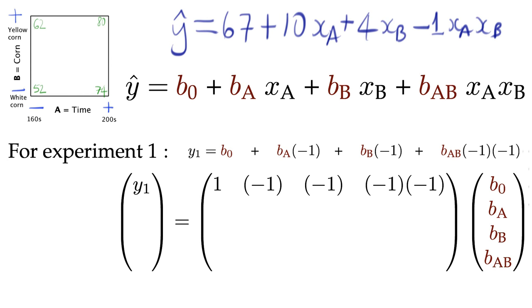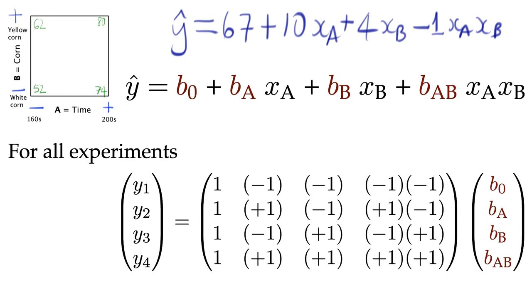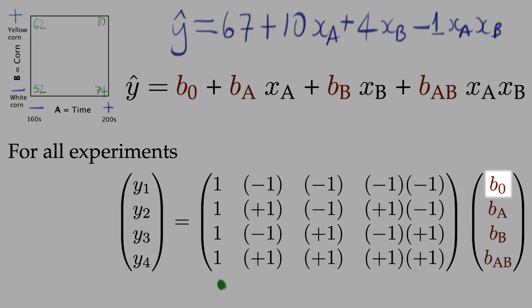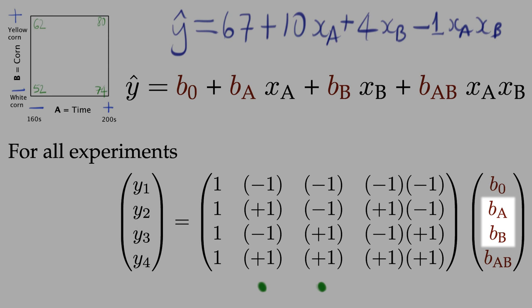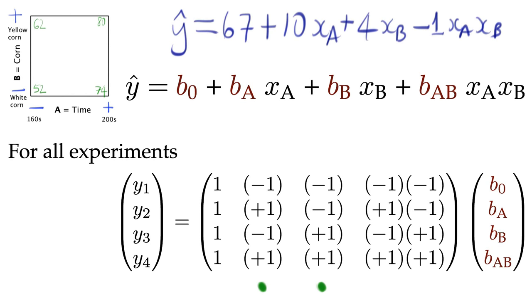In matrix form, the equations are written as shown here on the screen. Three things quickly become apparent. Firstly, we notice a column of ones in the first column. That corresponds to this parameter b0, the intercept. Next, we notice that the second and third columns, in other words the columns that correspond to the parameters for a and b, are simply the columns from the standard order table. And finally, the last column corresponds to the two-factor interaction for AB.